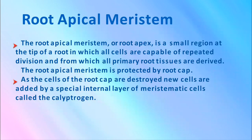The root apical meristem, or root apex, is a small region at the tip of the root in which all cells are capable of repeated division and from which all primary root tissues are derived. The root apical meristem is protected by a root cap. As the cells of the root cap are destroyed, new cells are added by a special internal layer of meristematic cells called the calyptrogen.